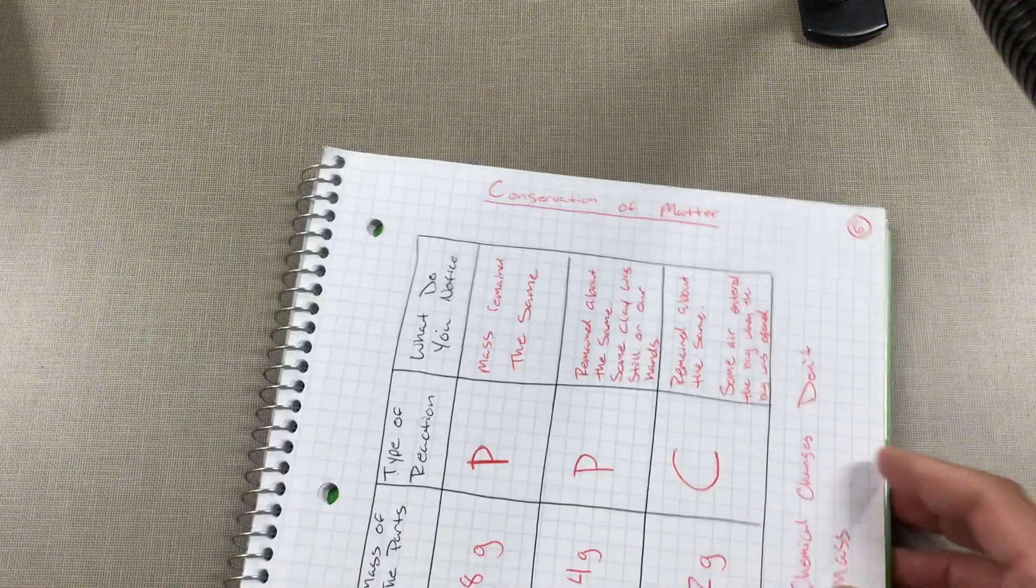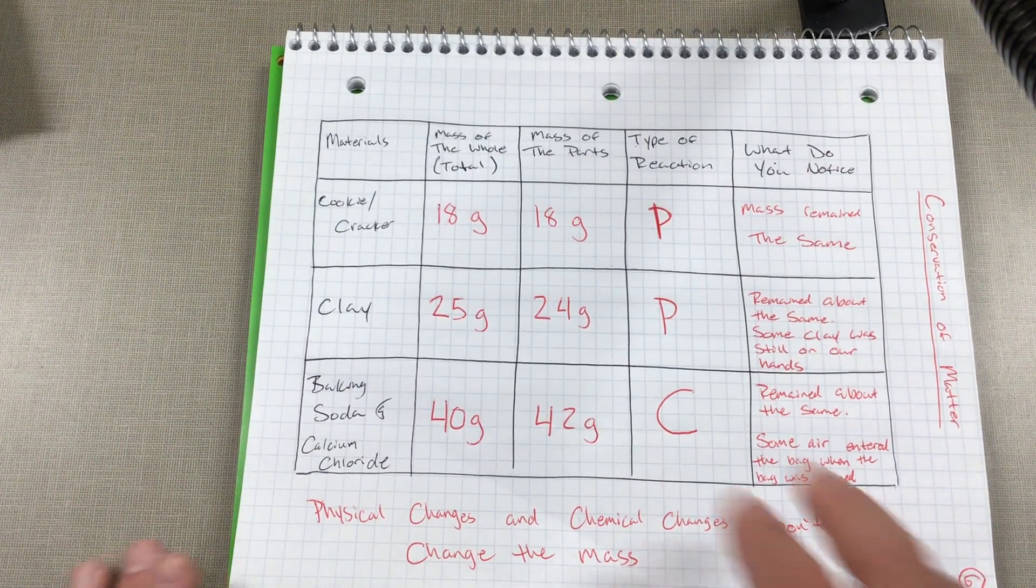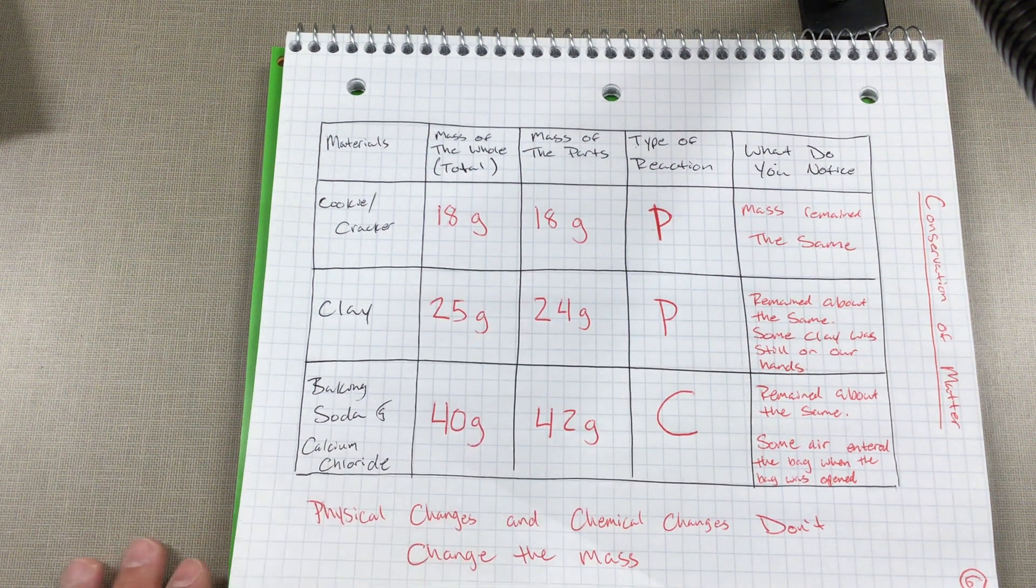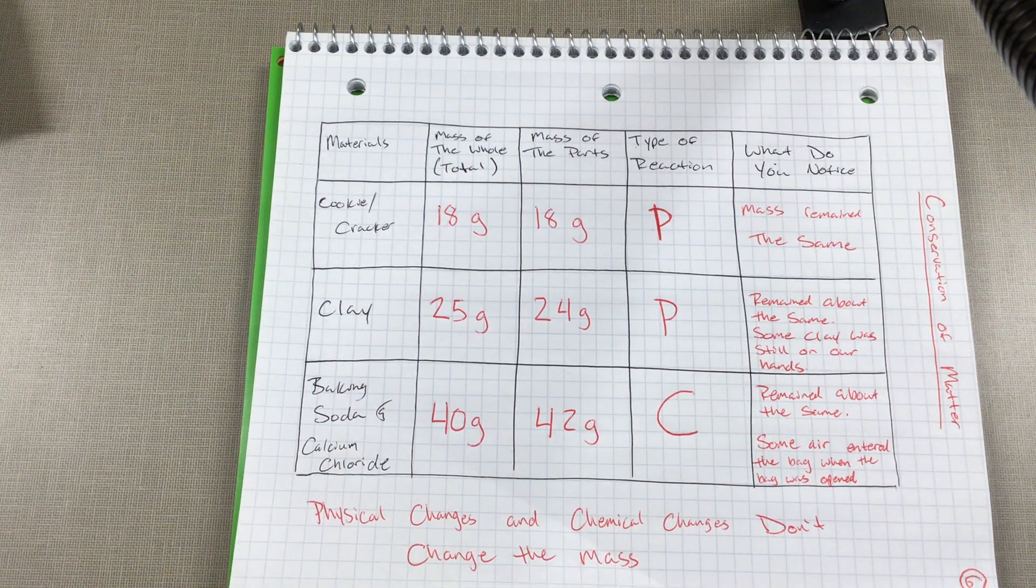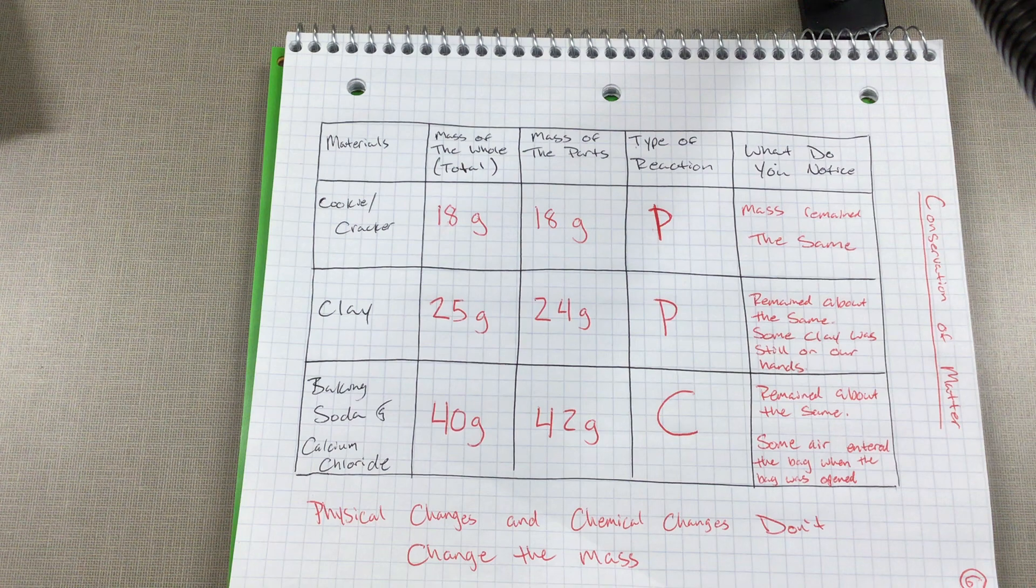And then yesterday, page number six, we did an investigation. Depending on which class you're in, your numbers might be a little bit different. We allowed for anywhere between one to two grams or one to two kilograms of difference for human error or tech error as well.